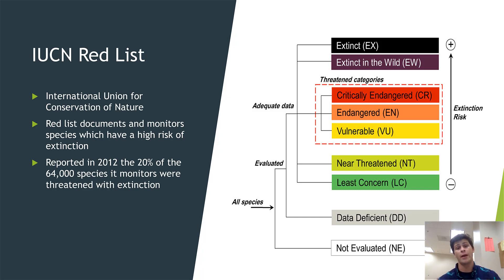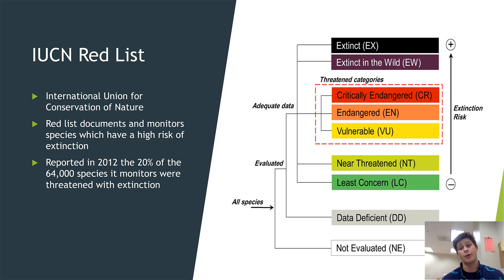Critically endangered species, shown in the red box, means that there are very, very few individuals left — we're talking maybe tens of individuals left in the wild. They are so threatened with extinction that even one disturbance event in their area could completely wipe them out. Then we get to our extinction categories: extinct in the wild and extinct. Extinct in the wild means there are absolutely no individuals of this species left in any wild ecosystem on the planet — the only place these organisms can be found is in captivity, such as zoos or research institutes.